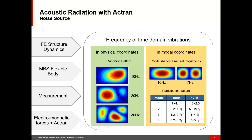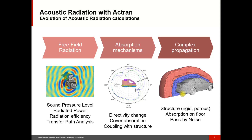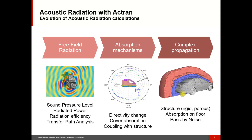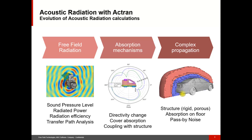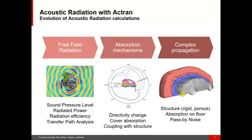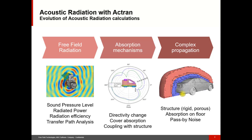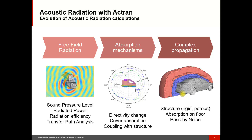Now that you know the key ingredients for an Actron acoustic radiation calculation, let's see what kind of information you can get out of it. FFT and Actron have been present in the market for quite a long time, and during this time we have supported many companies to do more and more complex simulations. The first step is usually to start with a simple radiation in free field, which reproduces the acoustic radiation in an anechoic chamber. This kind of model is very simple to create and already provides a lot of useful information such as sound pressure level, radiated power, or transfer path analysis.